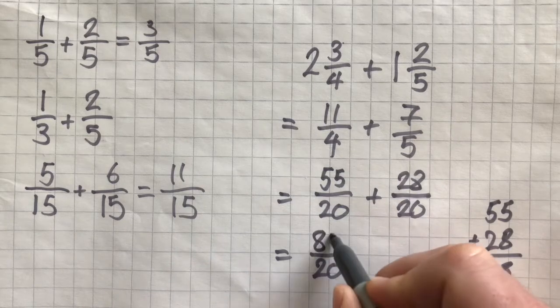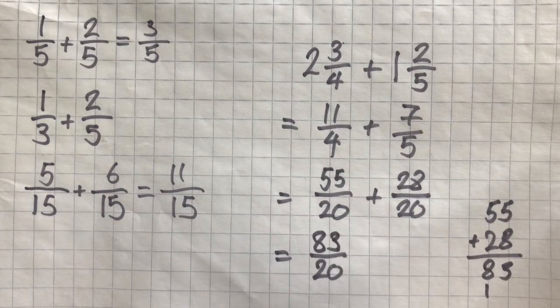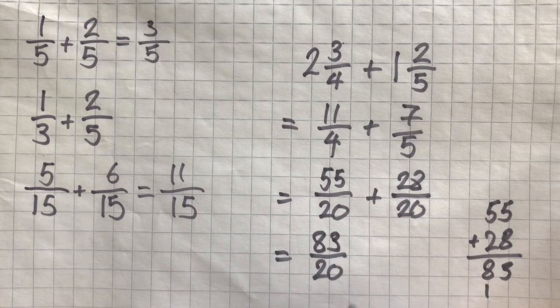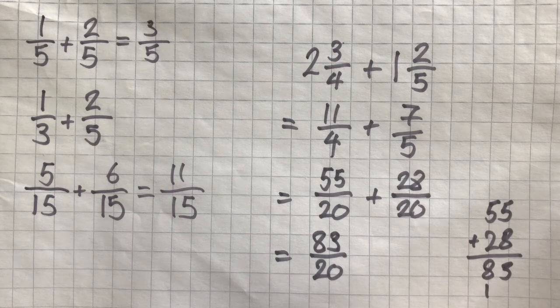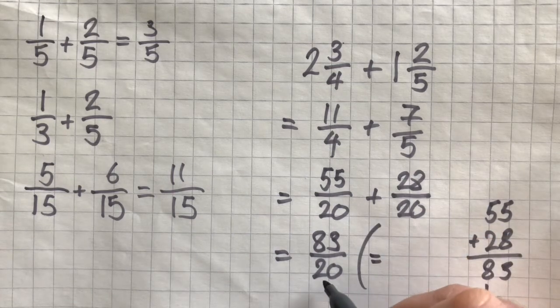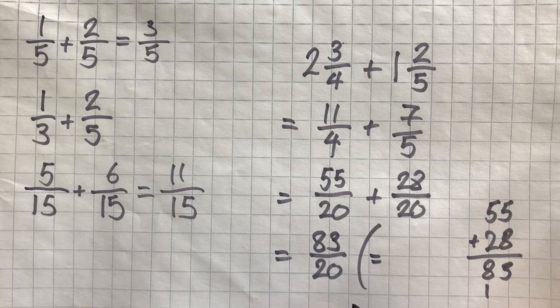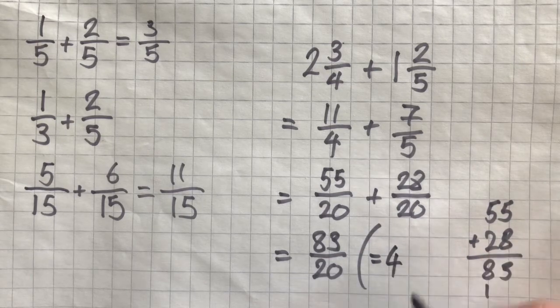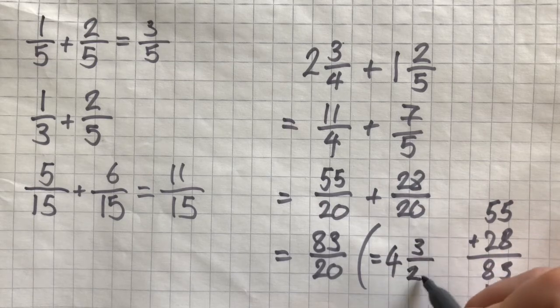So, we get 83 over 20. And in your SATs, that is the answer that they would be looking for. If you wanted to convert it to a mixed number, you would do how many 20s go into 83, which is 4, and you would have 3 left over. So, it would become 4 and 3 20ths.